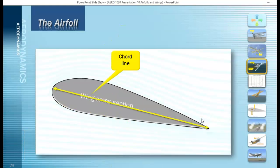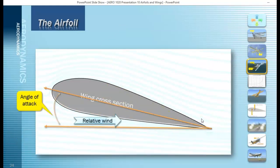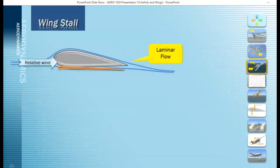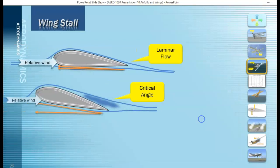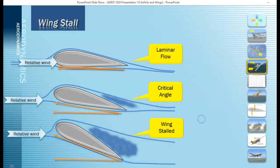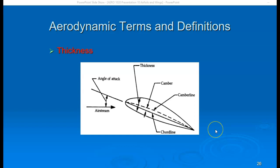The angle of attack is the angle between the relative wind and the cord line, and it is controlled by the pilot. The pilot can control the angle of attack by varying the pitch of the airplane. Another aerodynamic term is thickness — simply the thickness of the airfoil at different points along the camber line.